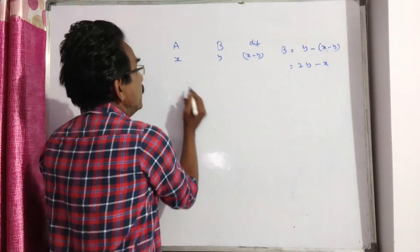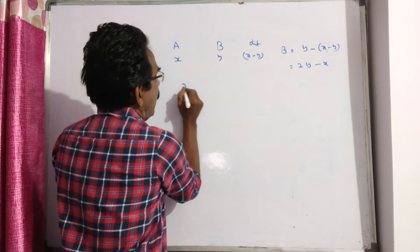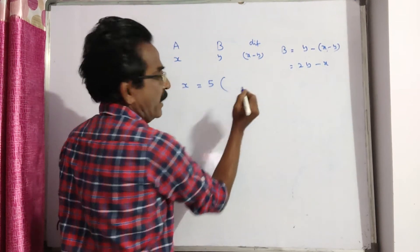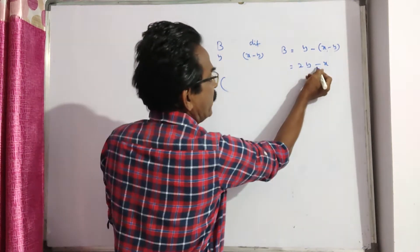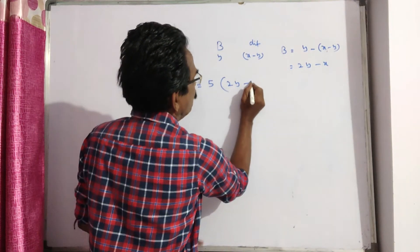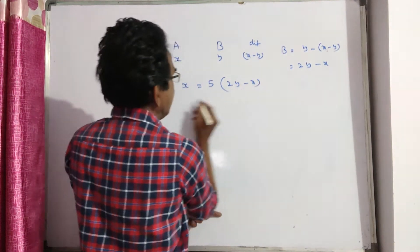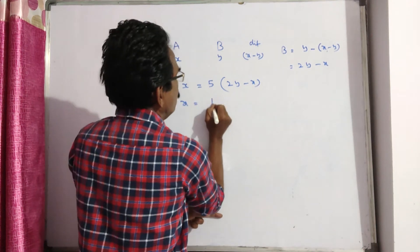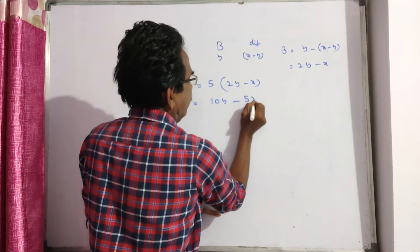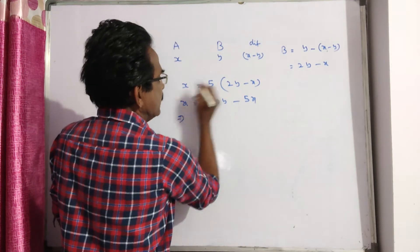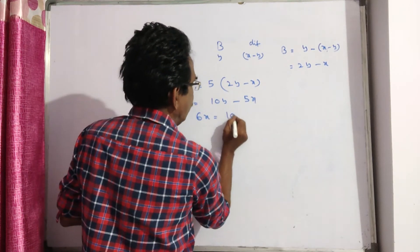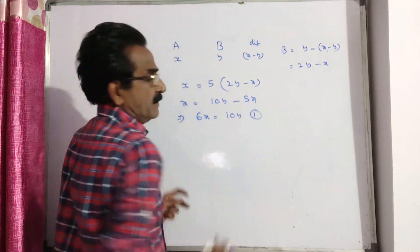So what A says: I am five times as old as you were. So x is equal to 5 into (2y minus x), which gives x is equal to 10y minus 5x. It implies 6x is equal to 10y. This is equation 1.